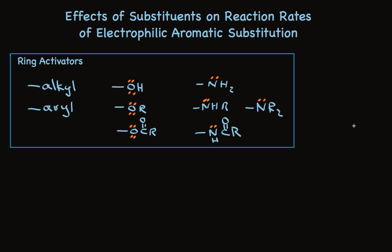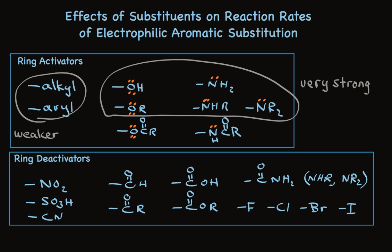So we can group these into three subgroups. These are weaker than the others, and these are especially strong. When we look at the ring-deactivators, all of these substituents pull electron density from the aromatic ring. The nitro group is especially strong, and the halogens are weaker.